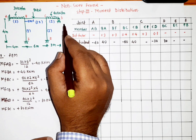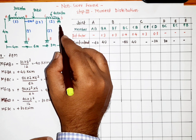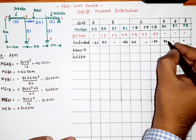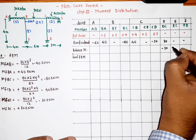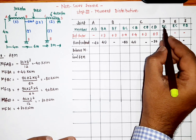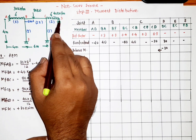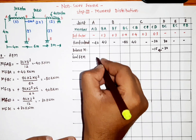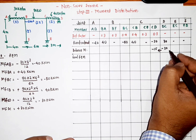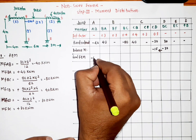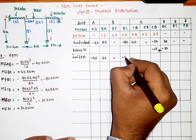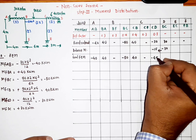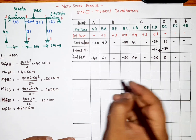Point D is a roller support, so the moment there must be zero; we must balance it. We add the negative equal value: since DC = +30, we add -30. We then carry over half from D to C, giving -15 at DC. The updated values after this balancing are: AB = -40, BA = +40, BC = -80, CB = +40, CD_total = 35, DC = -30, carry-over to DC = -15, giving -45 net, and the moment at D becomes approximately zero.